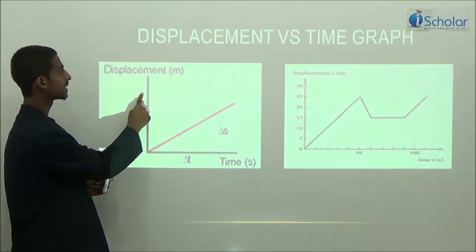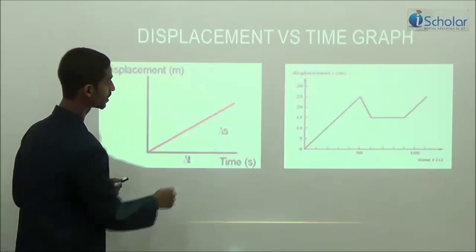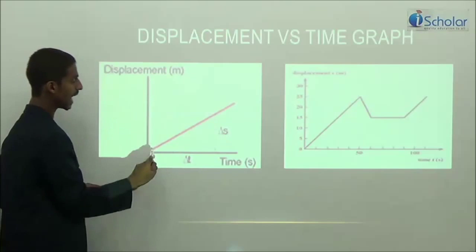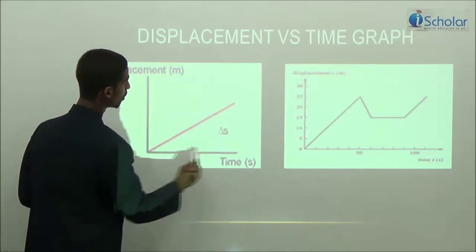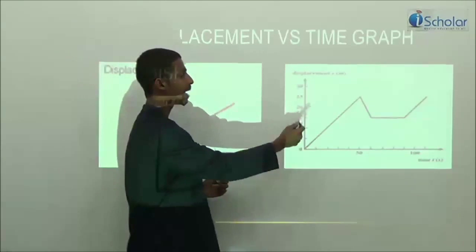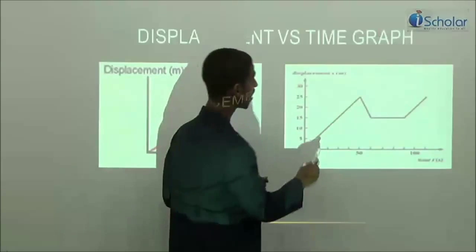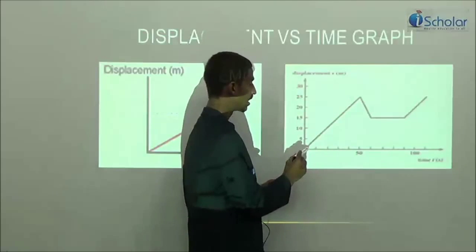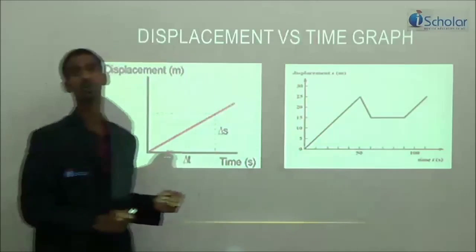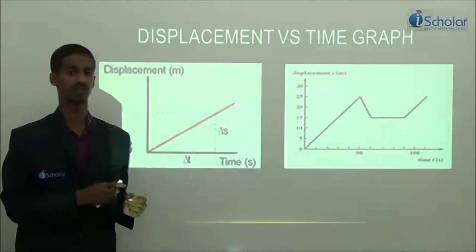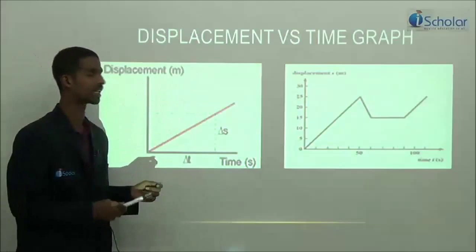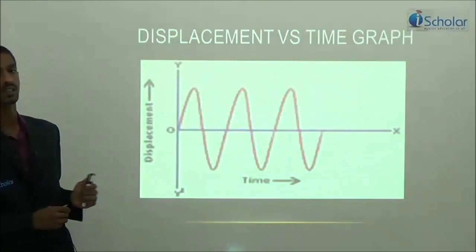Here is an example of a displacement-time graph with displacement on the y-axis and time on the x-axis. We have different displacements at different intervals of time, and when we plot the graph we get a linear graph. Here is another example of a displacement-time graph which is not linear — initially it is linear, then it decreases and becomes nonlinear. So these are two different types: linear and nonlinear.